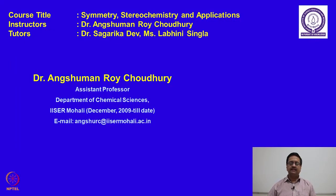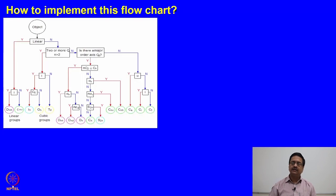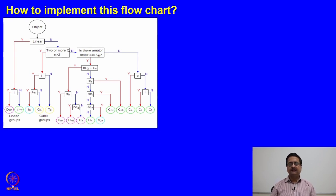In the last class, we were discussing about molecular point groups of various organic and organometallic complexes. So in today's lecture, we will continue our understanding with different molecules and how to derive their point groups. In the previous class, we had discussed this flow chart which we need to follow for various organic compounds to find out their point groups.